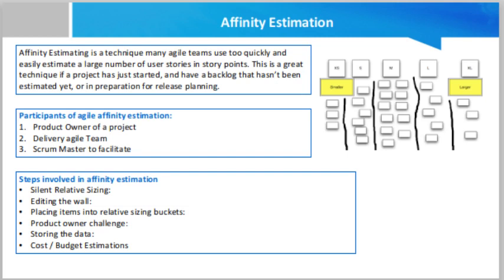Affinity estimation is a technique many agile teams use to quickly and easily estimate a large number of user stories in story points. This is a great technique if a project has just started and has a backlog that has not been estimated yet, or in preparation for release planning.